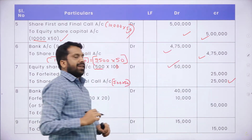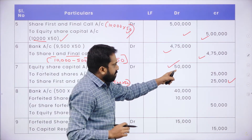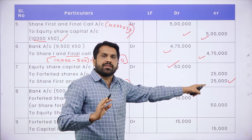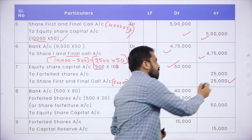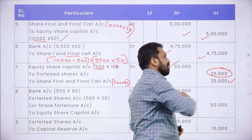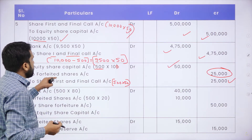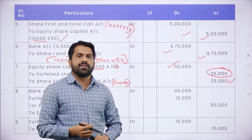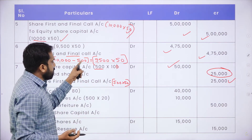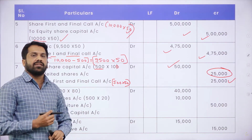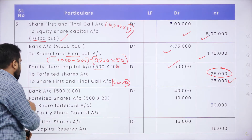₹50,000 minus ₹25,000 = ₹25,000. The difference is called your Forfeited Shares Account. Remember these journal entries — the format stays the same, but the calculation changes for every problem.